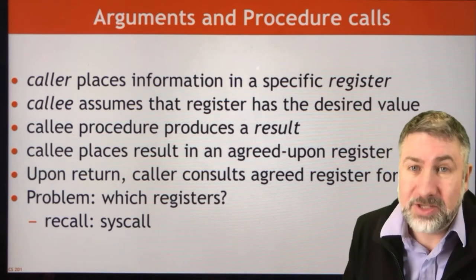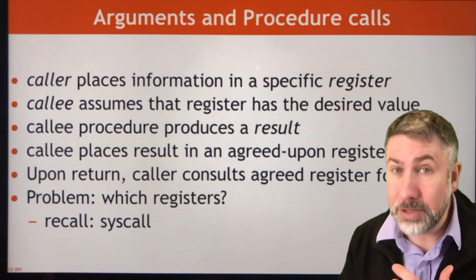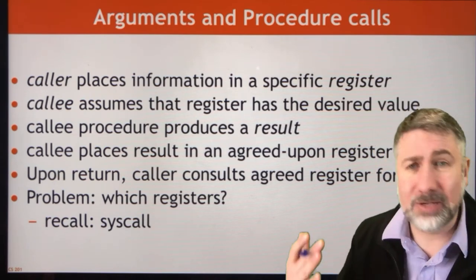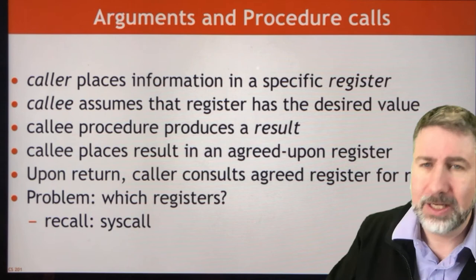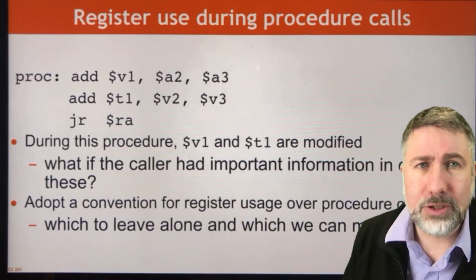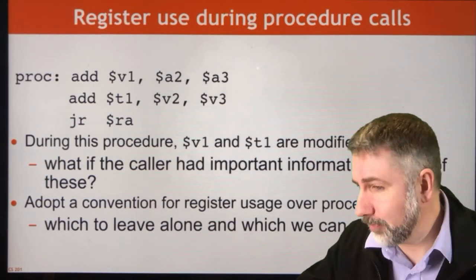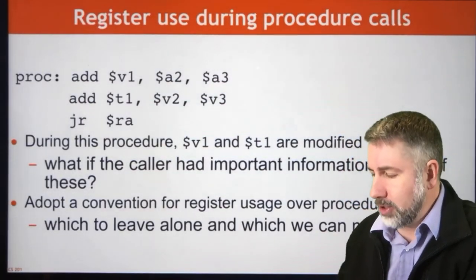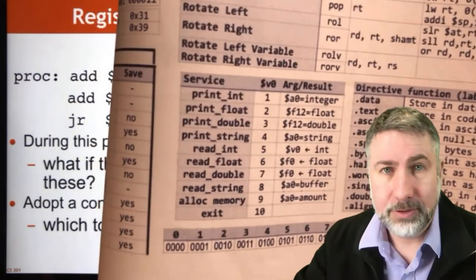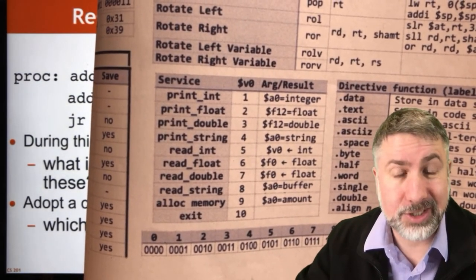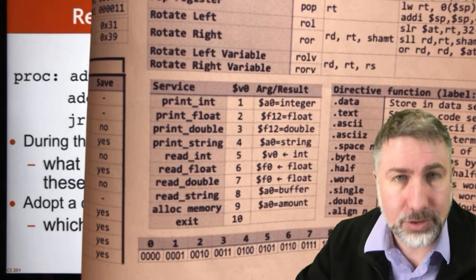The problem is which registers do we use? How do we agree on which registers to use? Well we already have some basic protocol for this using the syscall. When we do a syscall we put some information in a particular register — the V register — and that tells the syscall what we are asking it to do.